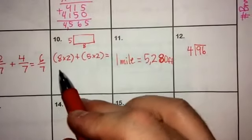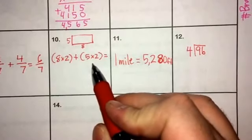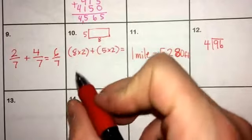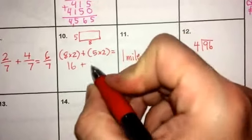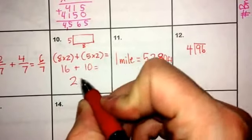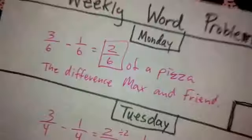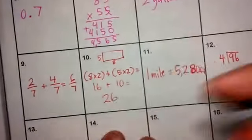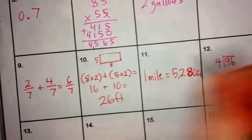So I'm going to do 8 times 2 plus 5 times 2. 8 times 2 is going to give me 16. 5 times 2 is going to give me 10, and when I add those together, I'm going to end up with 26. And just to be sure, I'm going to go back and check my label, and they were feet. So I'm going to get 26 feet as my answer here.